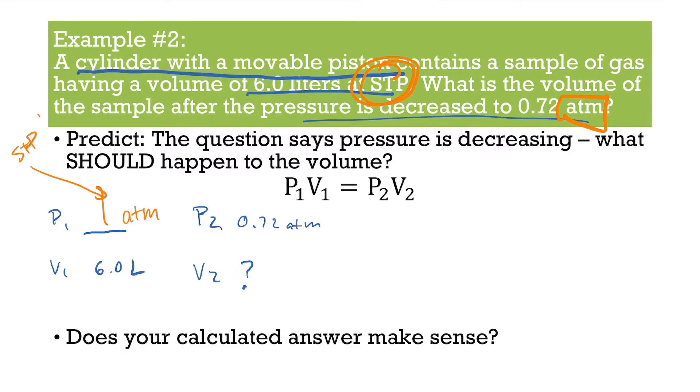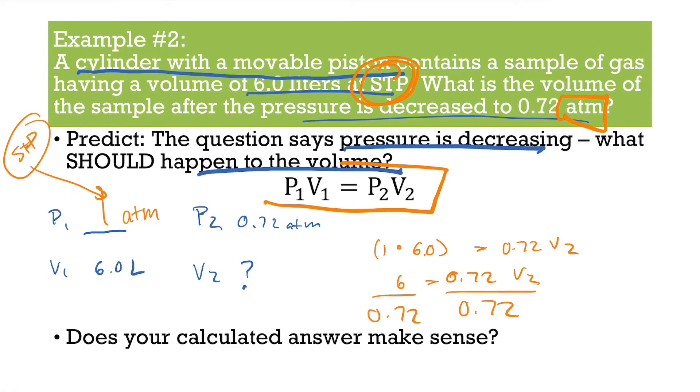And so now we're just going to plug in to this formula. So we get 1 times 6 equals 0.72 times V2. So you get 6 equals 0.72 divided. Before we do this, let's make our prediction. It says pressure is decreasing. What should happen to the volume? So our prediction, if pressure is decreasing, our volume should increase. And let's finish up our calculation and see that. 6 divided by 0.72, V2 is 8.3.